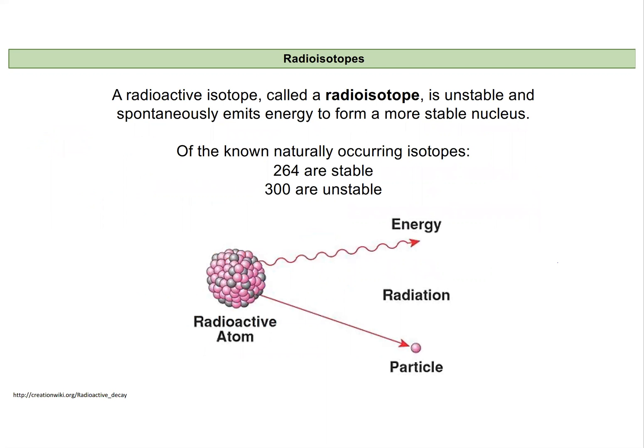A radioactive isotope is also called a radioisotope. It's an unstable nucleus, and because it's unstable it'll emit energy in hopes of forming a more stable nucleus. It will also sometimes emit particles as well to try to become a more stable nucleus.